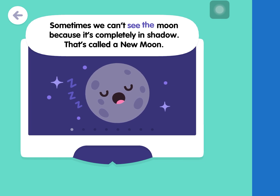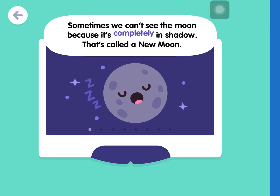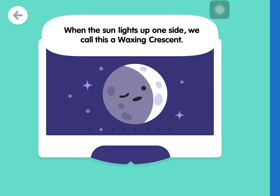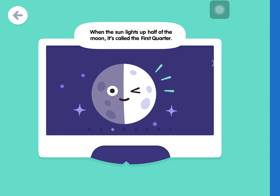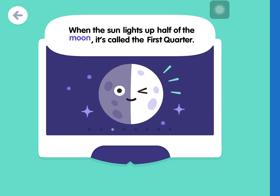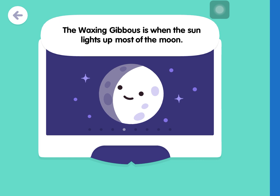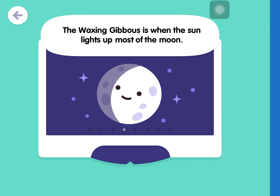Sometimes we can't see the moon because it's completely in shadow. That's called a new moon. When the sun lights up one side, we call this a waxing crescent. When the sun lights up half of the moon, it's called the first quarter. The waxing gibbous is when the sun lights up most of the moon.